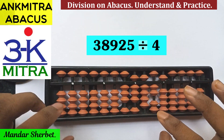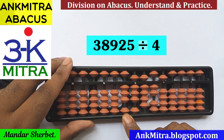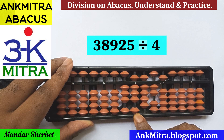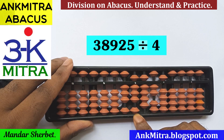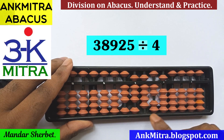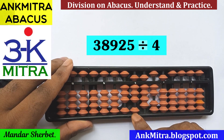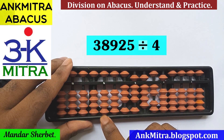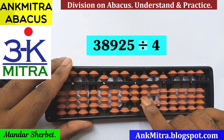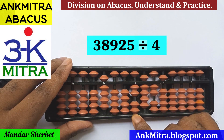We start with the first digit, 3, which is smaller than the divisor 4, so we move to the next rod and look at the number as 38. From the table of 4, the closest value is 9×4=36. We place 9 on the fourth rod of the answer set and subtract 36 from 38, leaving 2.